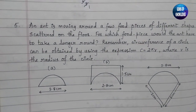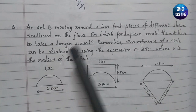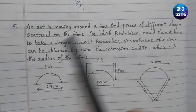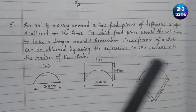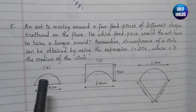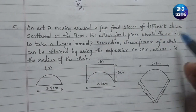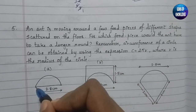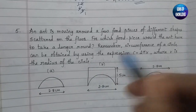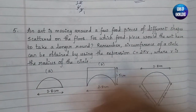Now for the last question of this exercise: an ant is moving around a few food pieces of different shapes scattered on the floor. There are three diagrams showing food pieces of different shapes. For which food piece would the ant have to take a longer round? We need to find the complete perimeter of these three figures — not the area, since the ant is travelling around the outside of each shape.